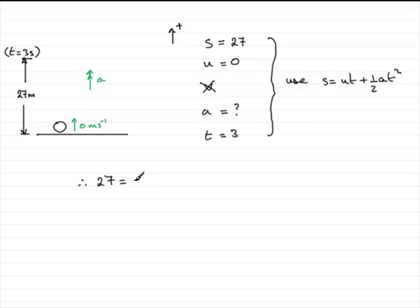Well that's just going to be 0 so I could leave it out but I must admit I'm just going to put it in just for the sake of it for the moment, UT. And then we've got plus half times A times T squared, so T is 3, so we've got 3 squared.